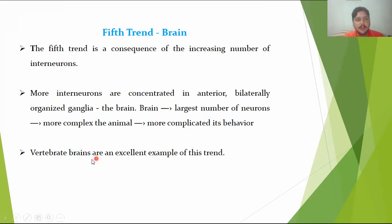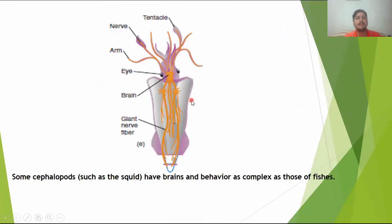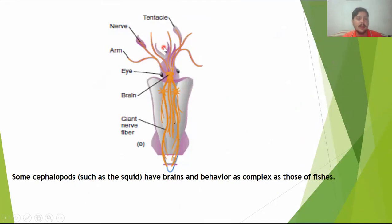The vertebrate brain is an excellent example of this trend, but looking at invertebrates, the squid — class Cephalopoda — displays complex behavior. The octopus can even memorize and retain information. In the squid's body you can see the eyes and tentacles. This group represents the largest invertebrates in the invertebrate kingdom, making the squid the prime example of the fifth evolutionary trend.